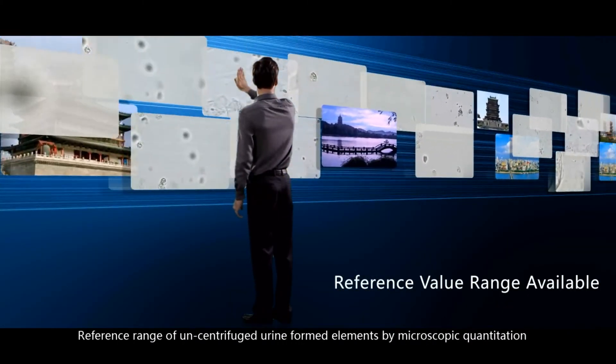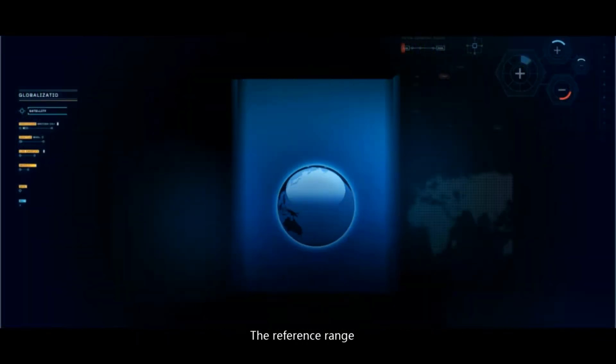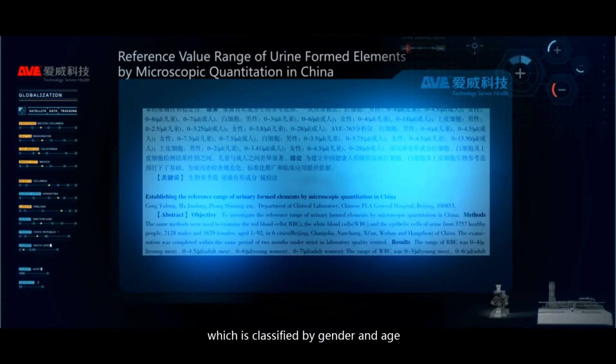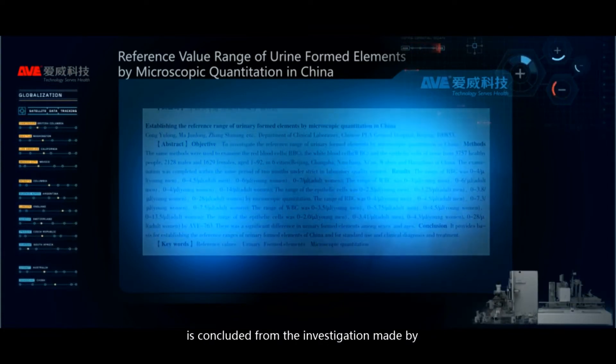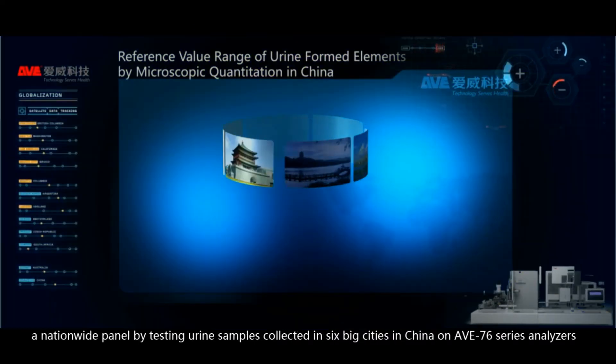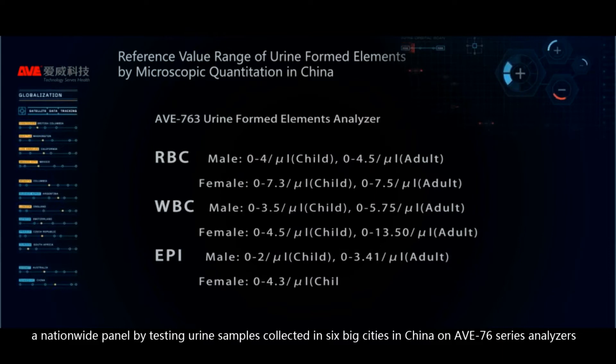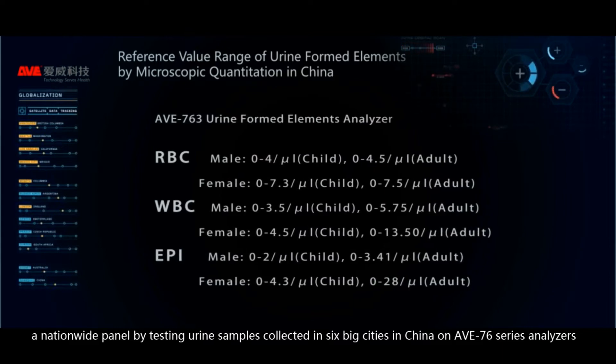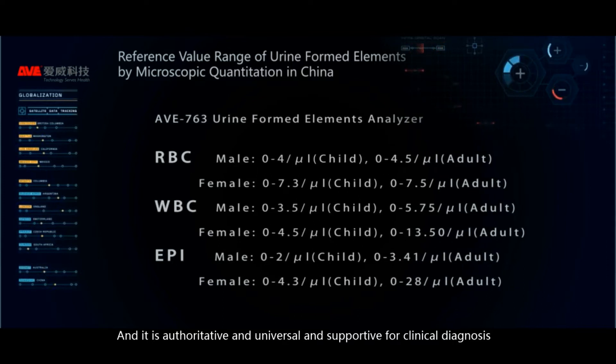Reference range of uncentrifuged urine formed elements by microscopic quantitation. The reference value range, which is classified by gender and age, is concluded from the investigation made by a nationwide panel by testing urine samples collected in six big cities in China on AVI-76 series analyzers and it is authoritative and universally supported for clinical diagnosis.